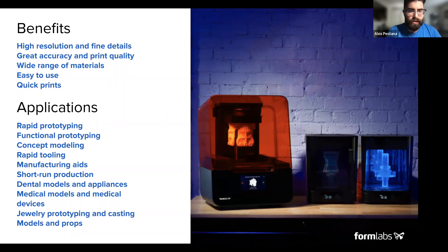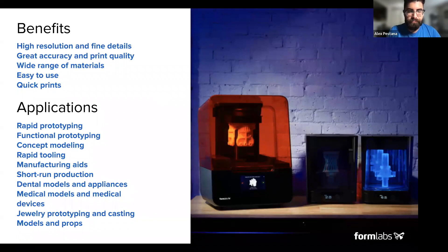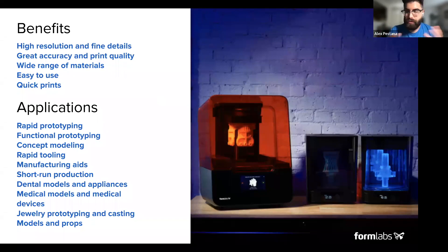Dental applications are a strong area: surgical guides, night guards, dental models, and impression molds can all be done on our system. We have a pretty wide customer base in the dental space. Medical models are another key application — for example, pre-surgical planning by printing the anatomy of a specific patient so surgeons can plan a surgery before going in, making the procedure much more smooth. And for jewelry prototyping and casting, we have a selection of castable wax resin supporting anything from small jewelry to larger castings on the Form 3L.